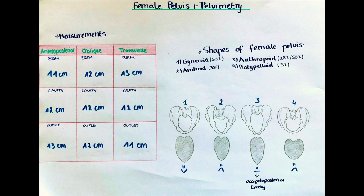In general, the three measurements we take to obtain the size of the pelvis are the anteroposterior diameter, the transverse diameter, and the right and left oblique diameter. These measurements are taken at different levels of the pelvis, which are the pelvic brim, the cavity, and the outlet.